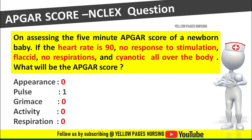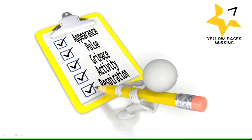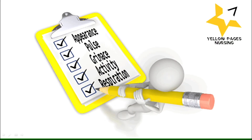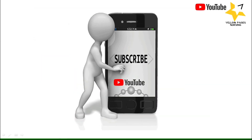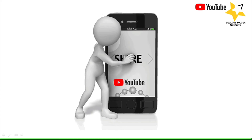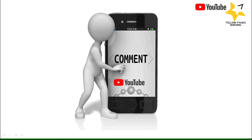The APGAR score, after summing all the scores, will be 1. The answer is 1, and the child needs full resuscitation. So there you have today's video regarding APGAR scoring and interpretation. If you find this video useful, please like it, subscribe, and do not forget to hit the bell icon to receive instant notifications. Thanks for watching and have a nice day.